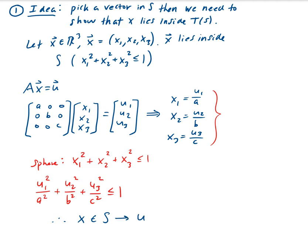So u belongs to the transformation of S, which is what we can see from there. That is a very general approach for showing something given a transformation: you pick a vector, operate on it using a matrix, and then see if it satisfies the property for that shape.